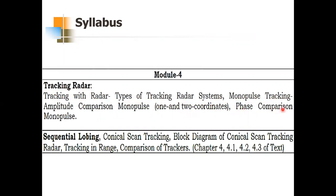The second type of tracking method is sequential lobbing, and the third method is conical scan tracking. Finally, we will see a comparison of these methods. This is a very interesting module — it's not too lengthy, there aren't many derivations, and it covers only chapters one, two, and three, which is very manageable. Let's start with what tracking is.